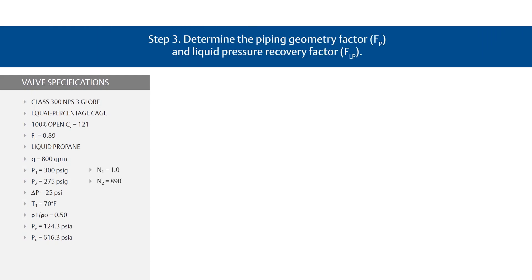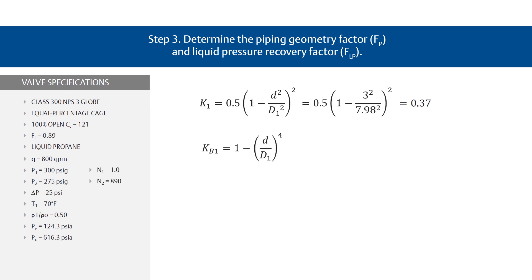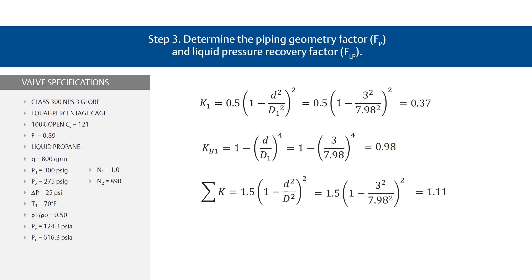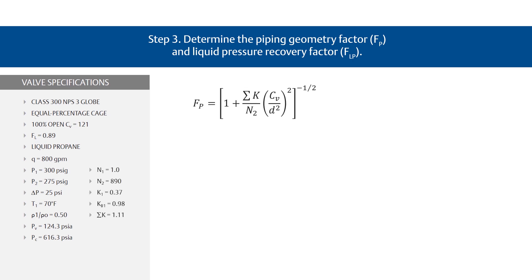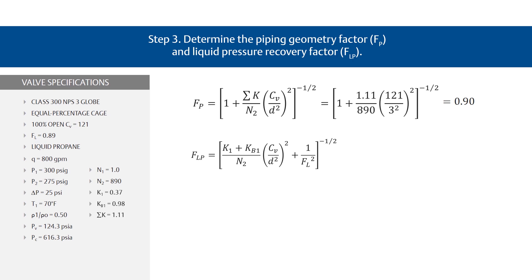Step 3: Determine the piping geometry factor or F sub P, and the liquid pressure recovery factor or F sub LP, adjusted for the attached fittings. First, find the necessary resistance coefficients needed when the upstream and downstream pipe sizes are the same. Use the K1 equation and plug in your variables for a result of 0.37. Now use the KB1 equation and enter your variables for a result of 0.98. Next, calculate the piping geometry factor or F sub P using the standard equation, for a resulting F sub P of 0.90. Then calculate the liquid pressure recovery factor or F sub LP using the equation, to find that F sub LP equals 0.81.